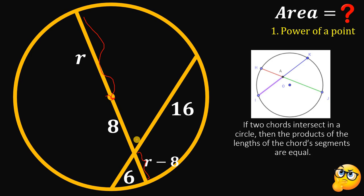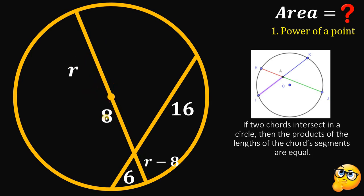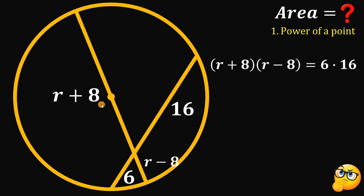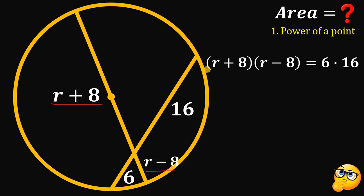So we have R minus 8 on one side, and if we add the two parts together, the full length of the segment on the other side must be equal to R plus 8. Using the Chord-Chord Power Theorem, we get: (R + 8)(R − 8) = 6 × 16. From here we can solve for R and finally get the area of the circle.